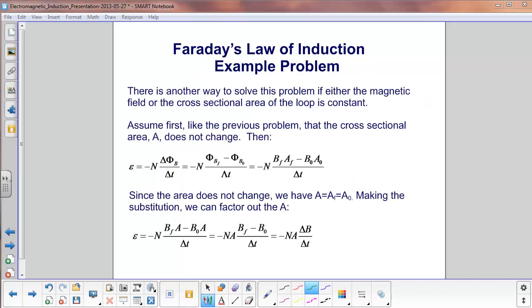There's another way to solve these problems if either the magnetic field, B, or the cross-sectional area, A, is constant. We're going to do a little algebra. So here's Faraday's law. E equals minus n change in flux over change in time. And we're going to assume, like the problem we just did, that the area does not change.